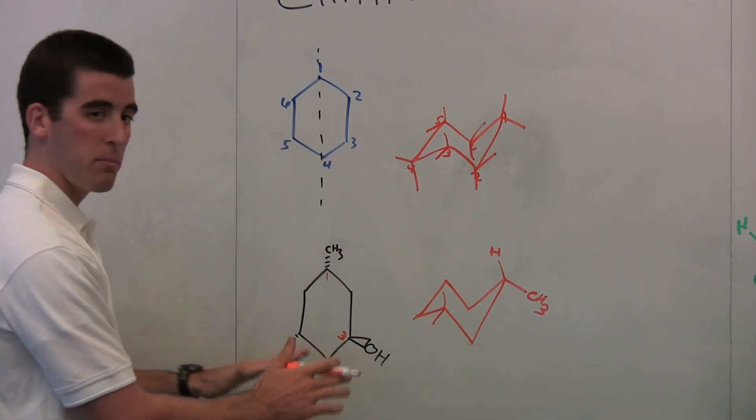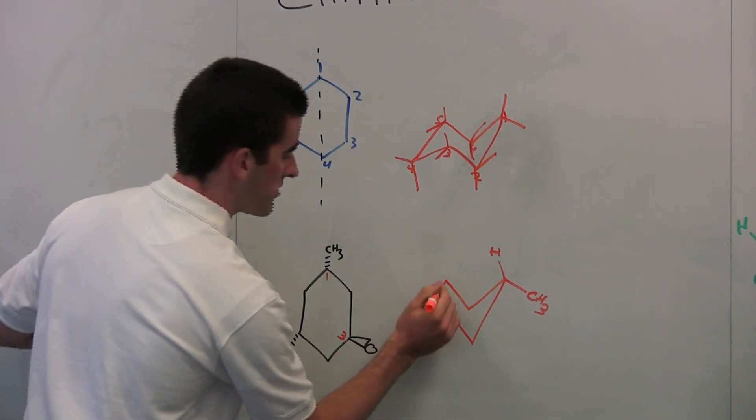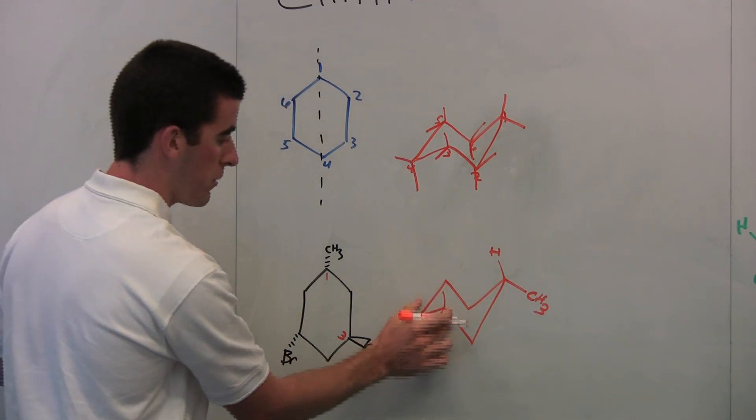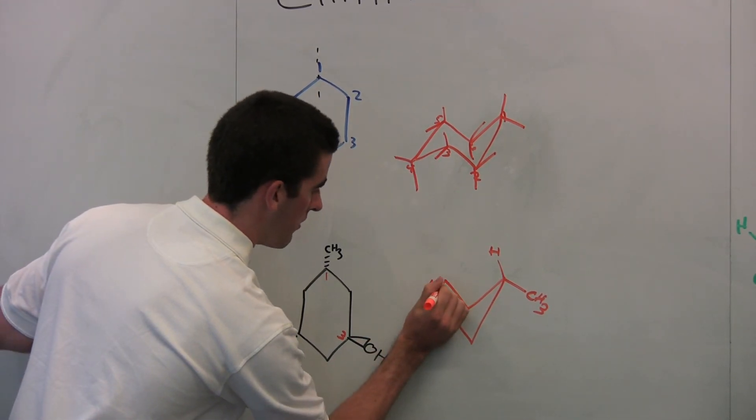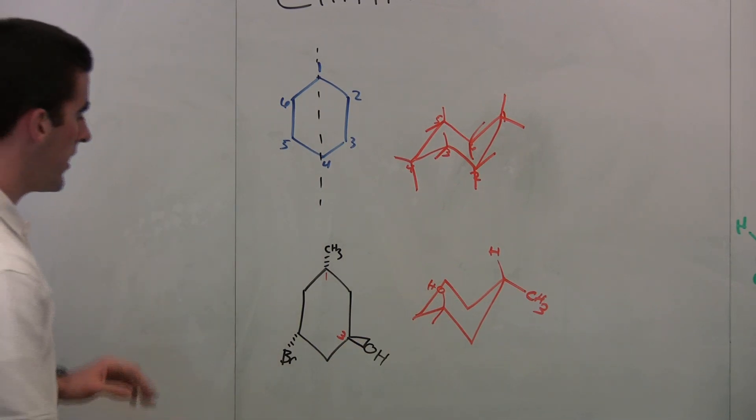So wedge, wedge is above the board. So it's also going to be in the above position. So above the plane of this board, right? So the OH comes off of that axial.